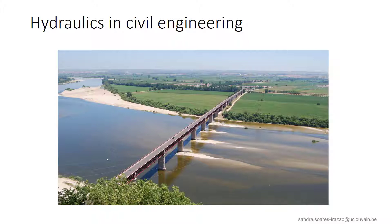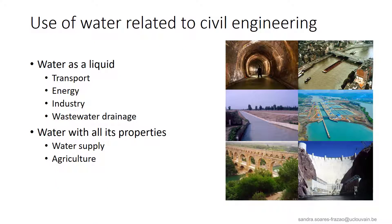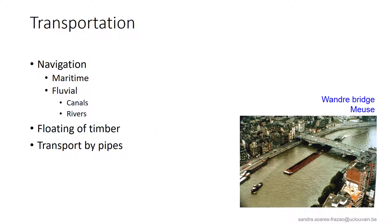There is a close link between all these disciplines in civil engineering. Looking more closely at the uses of water related to civil engineering, we can distinguish between the use of water just as a liquid or the use of water with all its properties — the latter being related to human consumption. The first use, just as a liquid, is for transportation — either maritime or fluvial in canals and rivers — as well as floating of timber or transport by pipes.